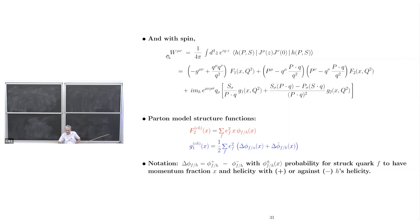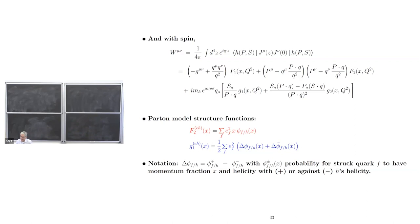It ties things together through these distributions, which appear in the structure functions with polarized protons and, in principle, photons. One more question: the structure is actually built on only one electron interacting with only one parton, right?